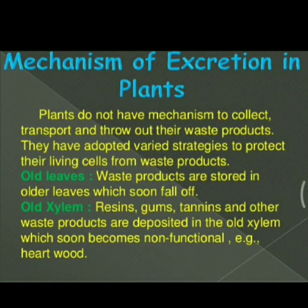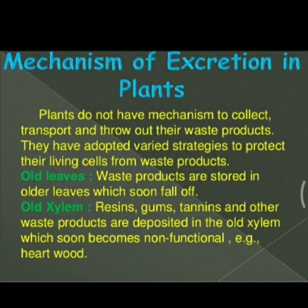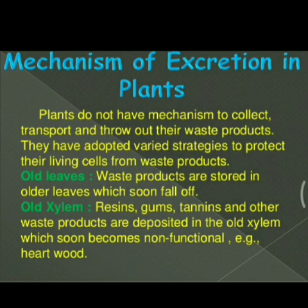If we discuss the mechanism of excretion in plants, we see that plants do not have a mechanism to collect, transport, and throw out their waste products. This is because plants absorb water from the soil with the help of roots; their food-making process is different, and so is the way their waste is excreted — totally different from animals. There is no proper mechanism to collect waste products. Old leaves store the waste product and then fall off — this is another way waste is removed from the plant body.